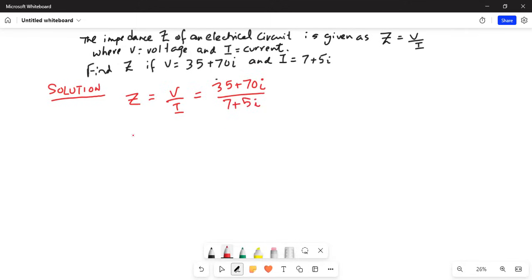So Z equals V over I and we will try to remove the imaginary number from the denominator. We have to remove the i from the denominator. In order to do that,